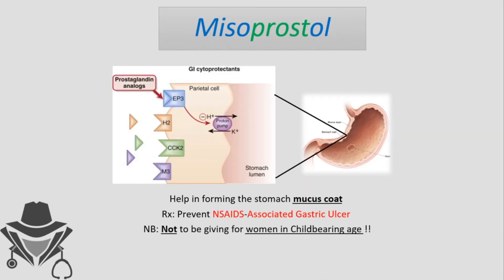The next drug is misoprostol. Prostaglandin E1 and E2 play an important role in forming the stomach mucus coat. If a patient uses NSAIDs for a long period, they inhibit both COX enzymes, which over time disturbs the balance between mucus and acid production in the stomach lining, ultimately leading to gastric ulcer.